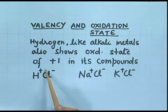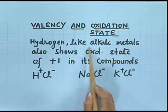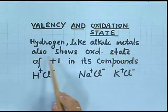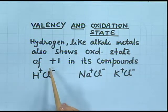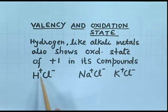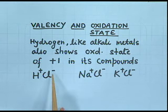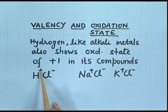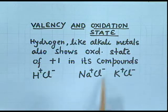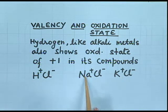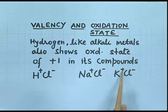Valency and oxidation state: hydrogen, like alkali metals, also shows an oxidation state of +1 in its compounds. For example, in HCl (hydrogen chloride), H is in the +1 state. Similarly, alkali metals like sodium and potassium are both in the +1 state.